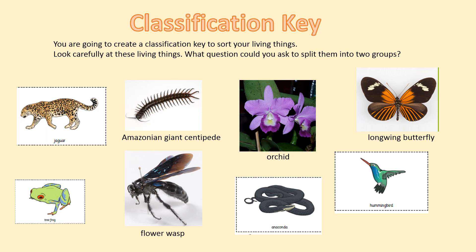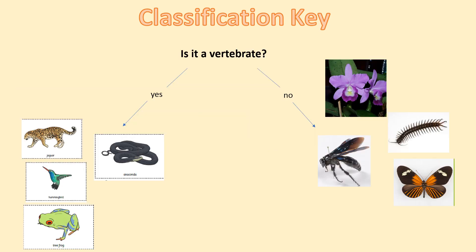You're going to create a classification key to sort your living things. Look carefully — what questions could you ask to split them into two groups? One question could be: is it a vertebrate? Yes or no. For yes, we have the jaguar, the anaconda, the hummingbird, and the tree frog. For no, we have the flower — which is a living thing but not an animal — the wasp, the centipede, and the butterfly.